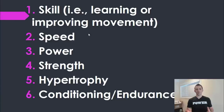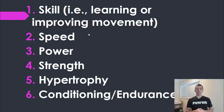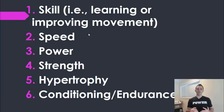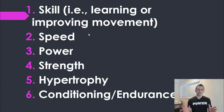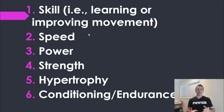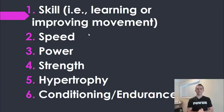Numbers two through five are actual metrics: did you get faster, can you move more powerfully, are you stronger, did you add muscle mass through hypertrophy? And then conditioning or endurance is number six. In other videos I actually split conditioning and endurance into about ten different types, and same with power and strength, but for now this is just a big overview.